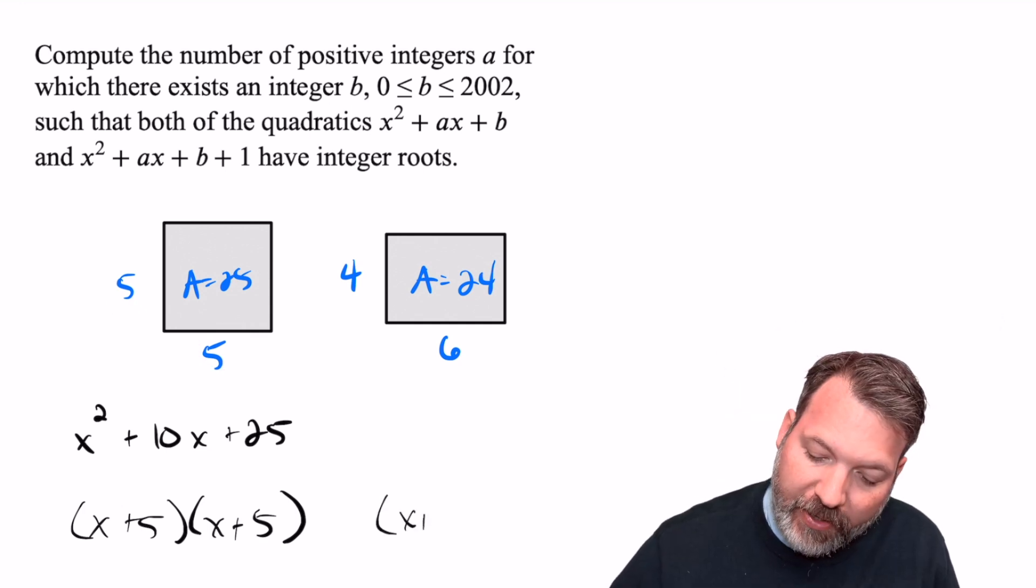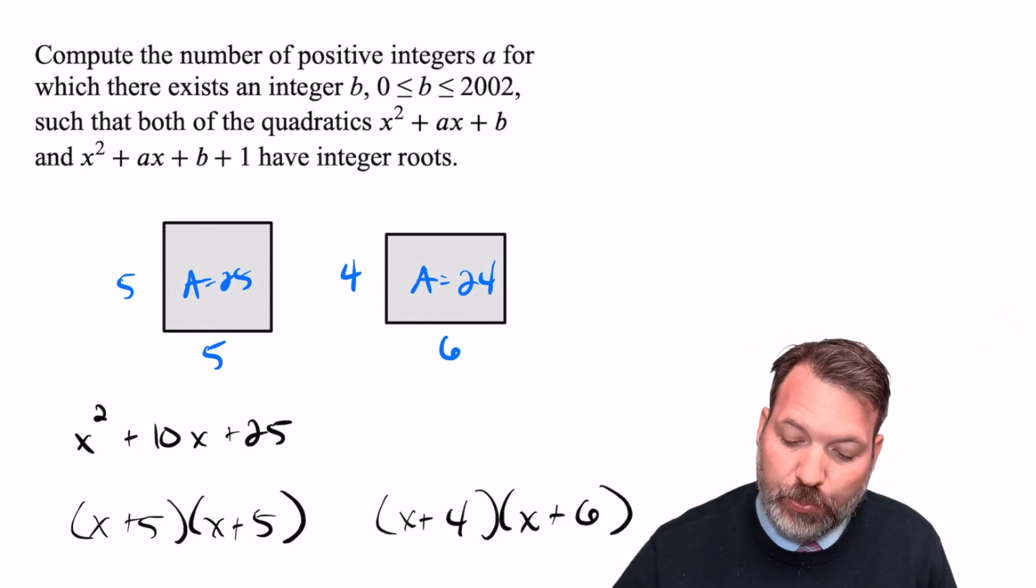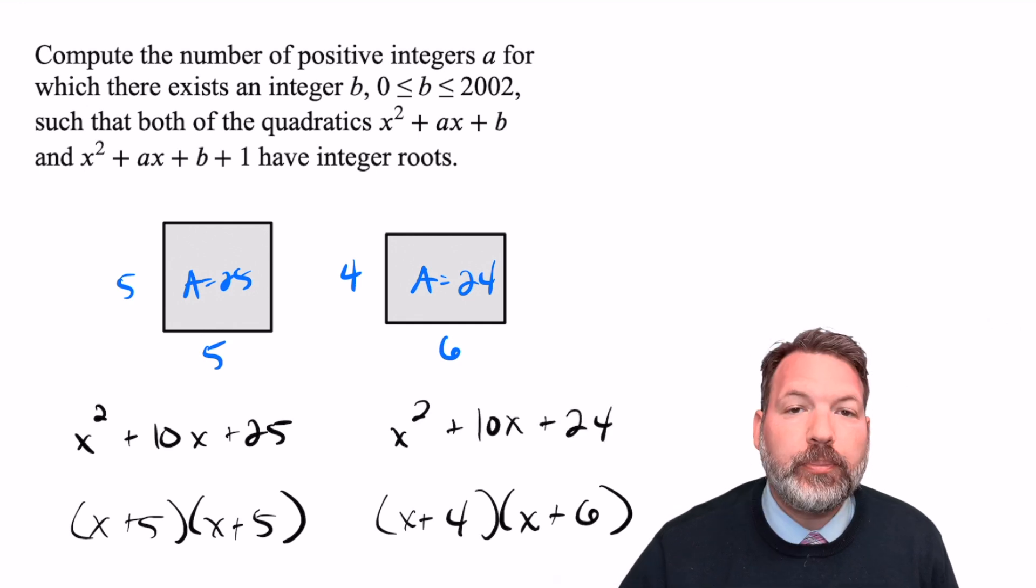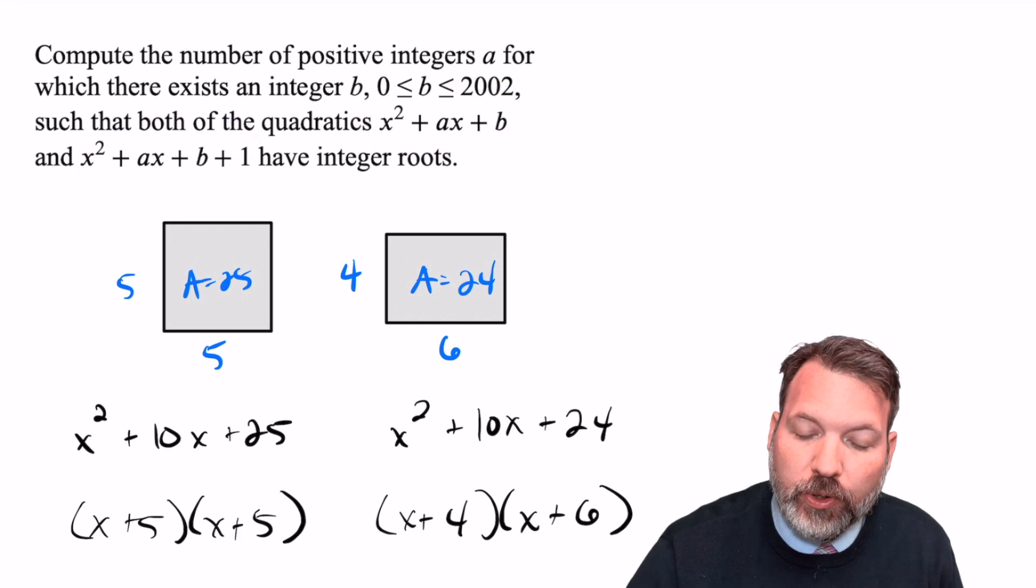Similarly, that four by six rectangle we could represent as (x + 4) times (x + 6), which would give us x² + 10x + 24. And hopefully you can now see how this is fitting with what was requested of us.